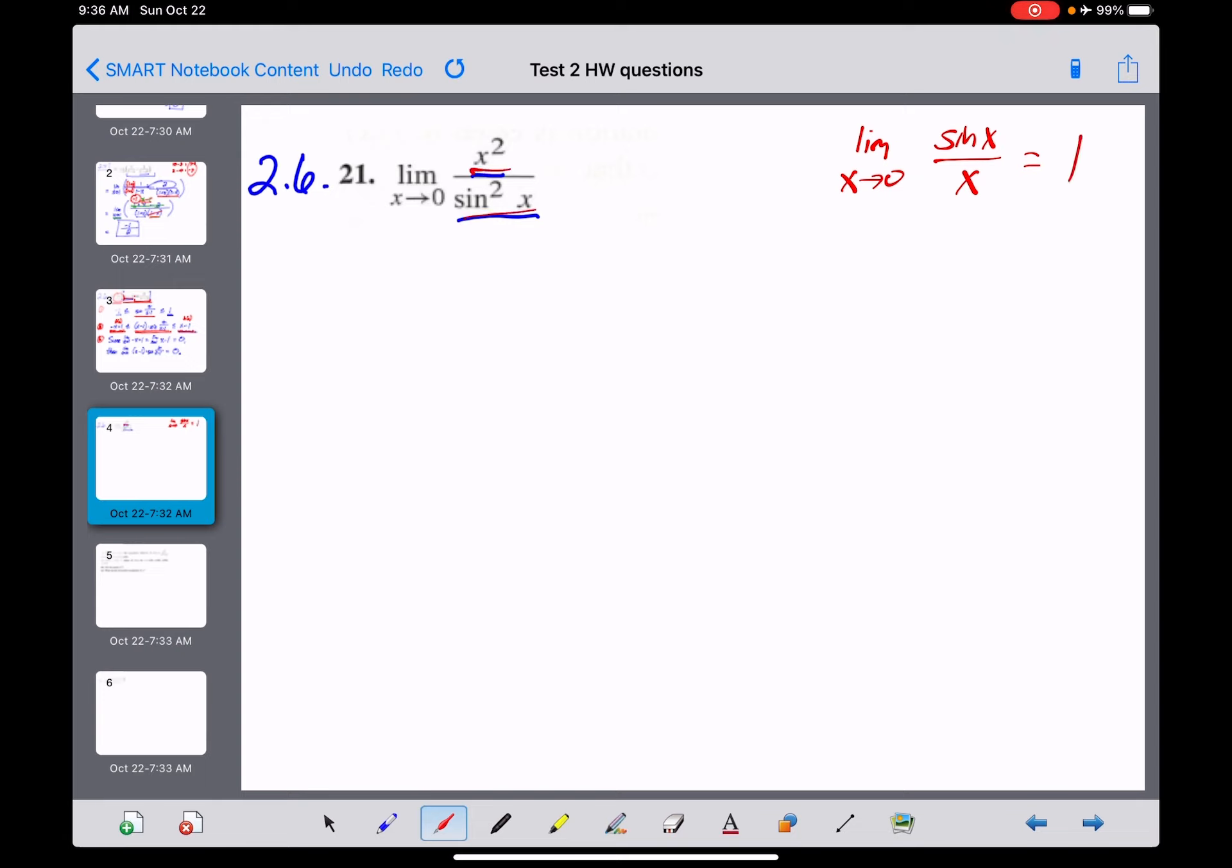Now with the x squared and the sine squared of x, you'll notice that's in the reciprocal direction right here. It's sine of x over x is what we wanted, but we have the reciprocal of that. And the squares are the problem as well.